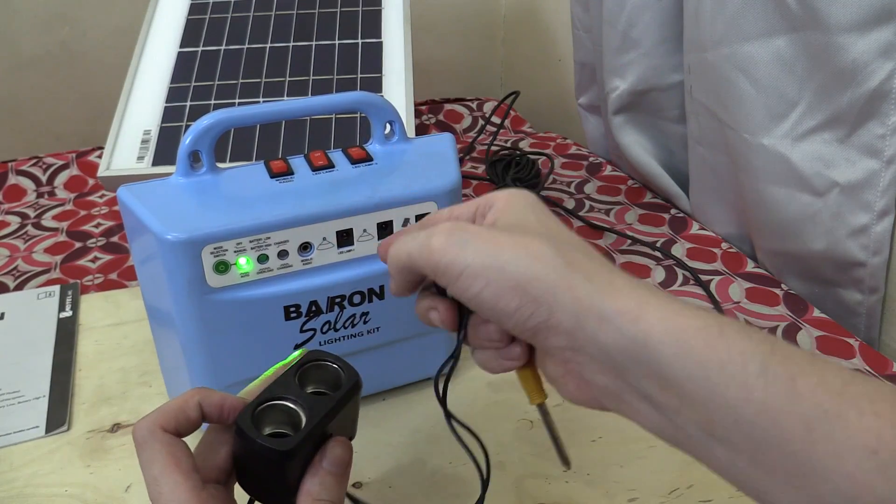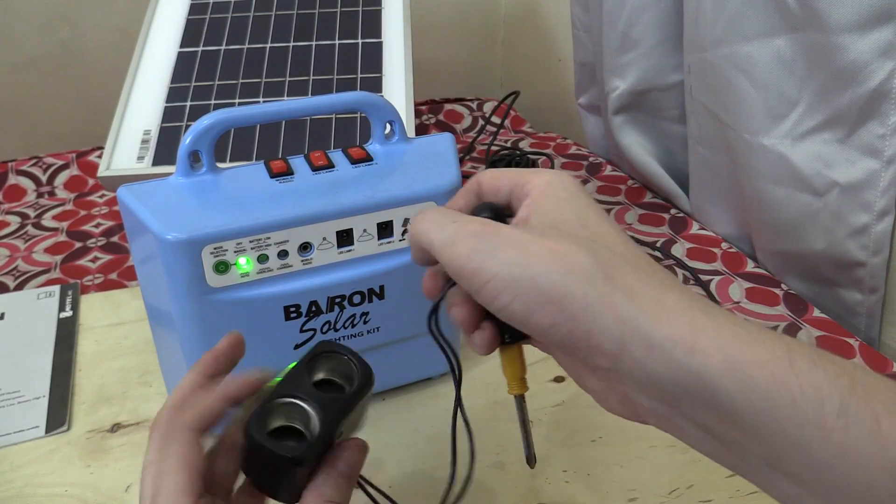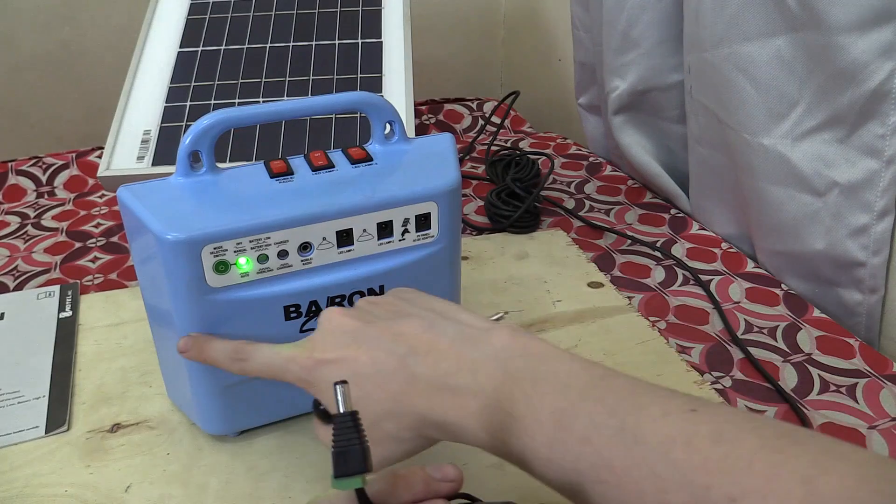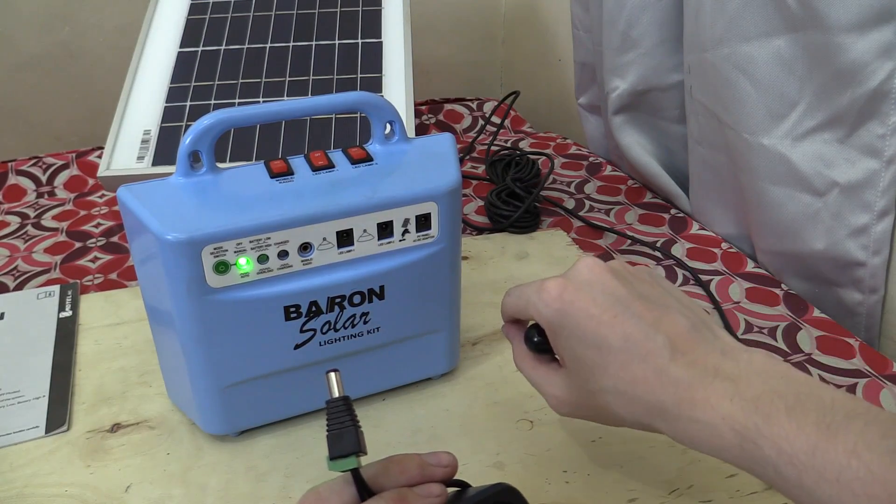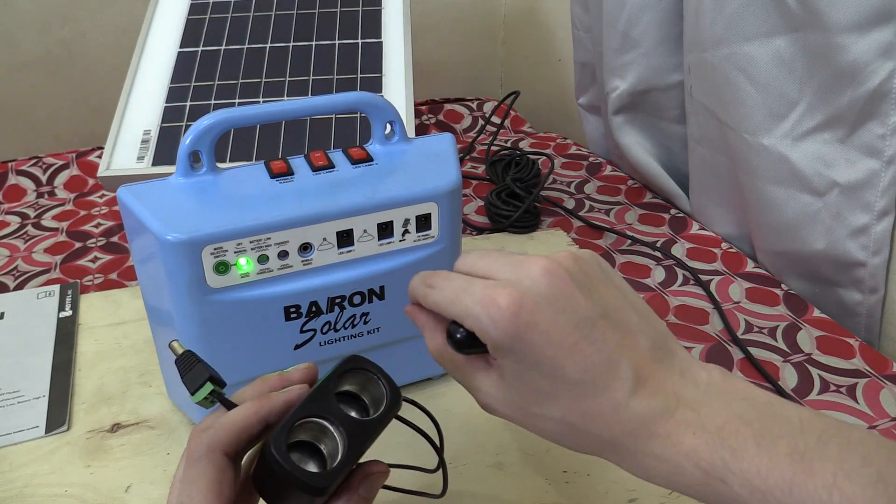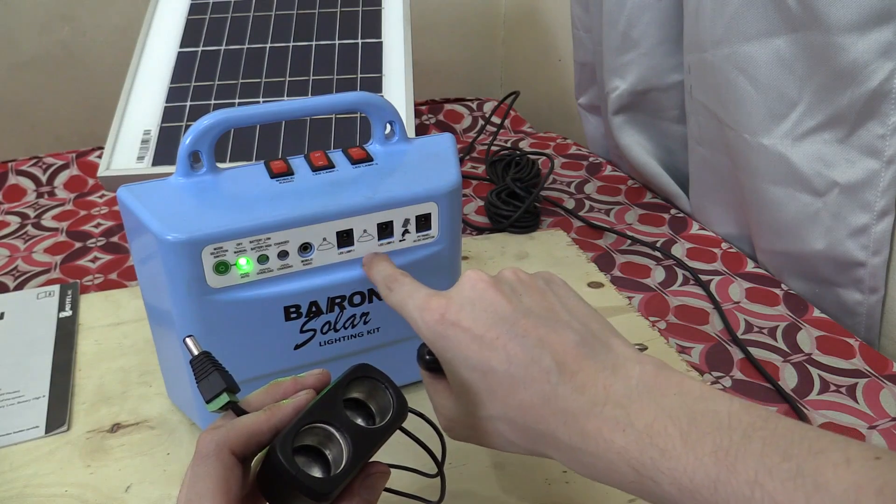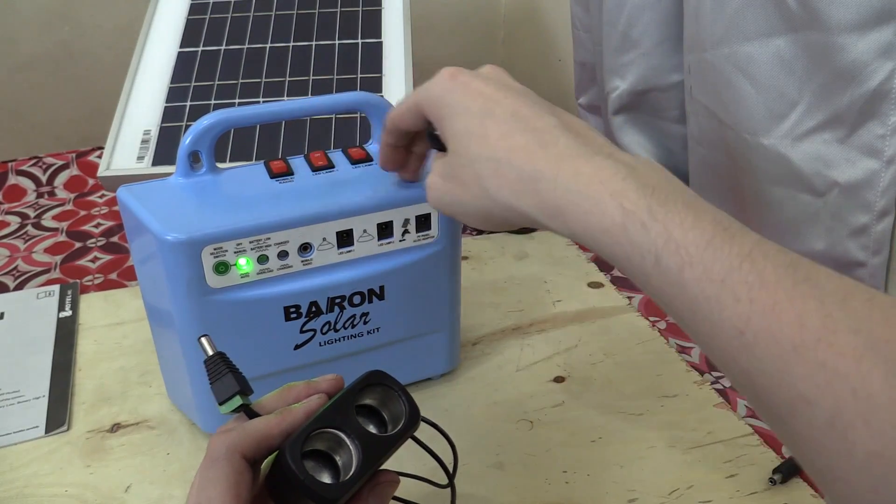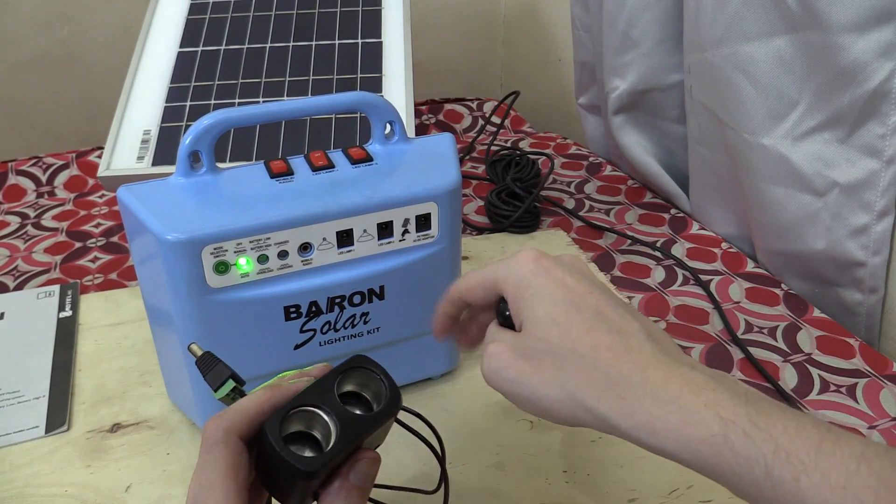So it does have protection against overcurrent and short circuit, and it will also disconnect the load if the battery voltage inside gets too low. So, you know, there shouldn't really be too much you can do to damage this because it's got the brains inside to try and stop you from doing that.